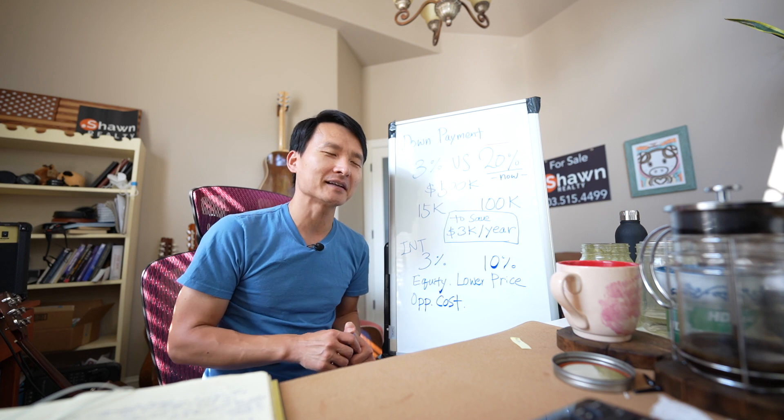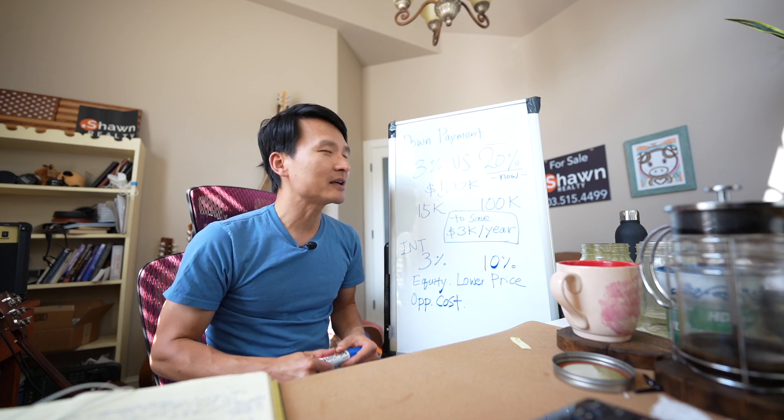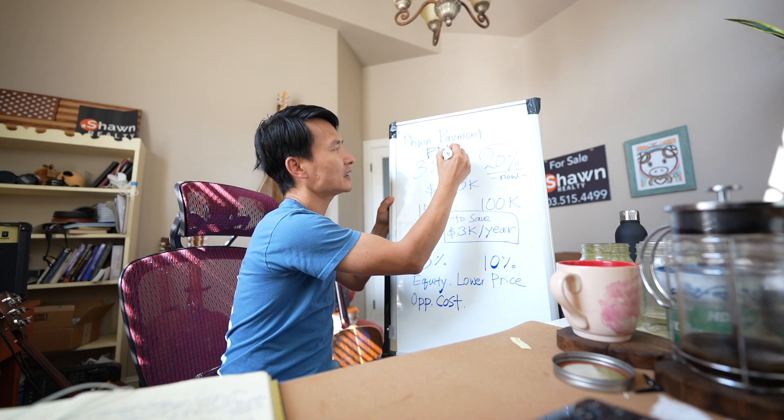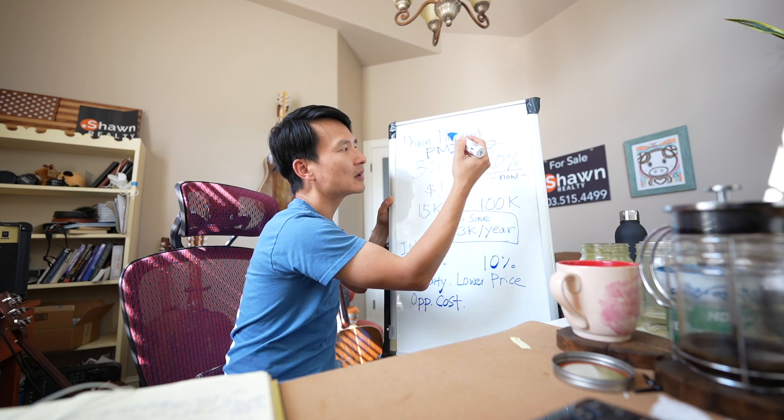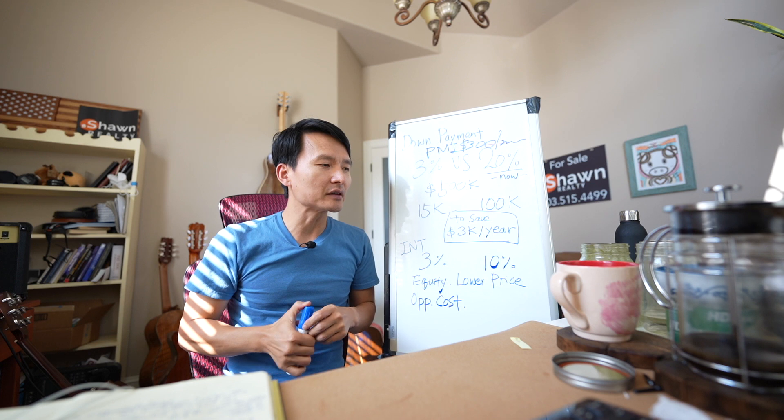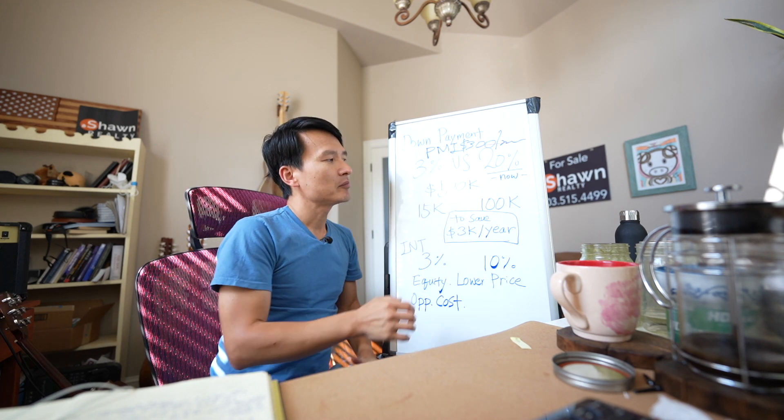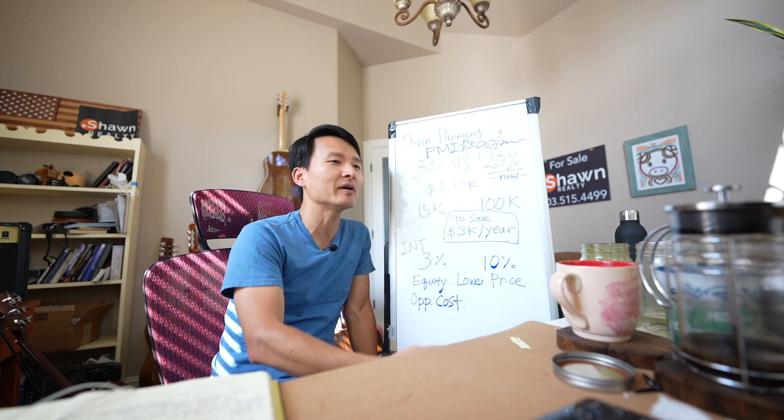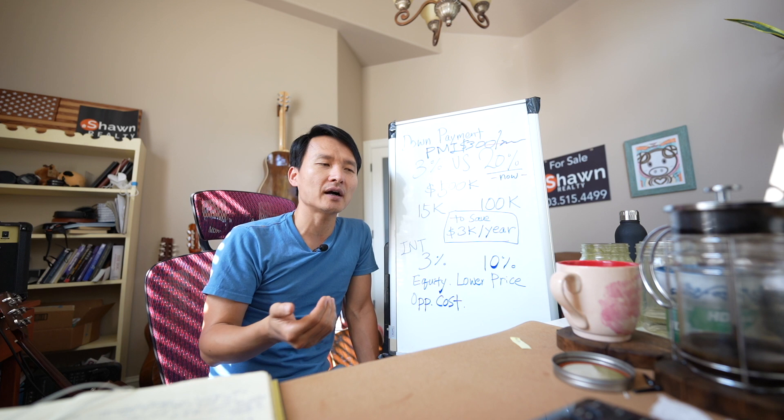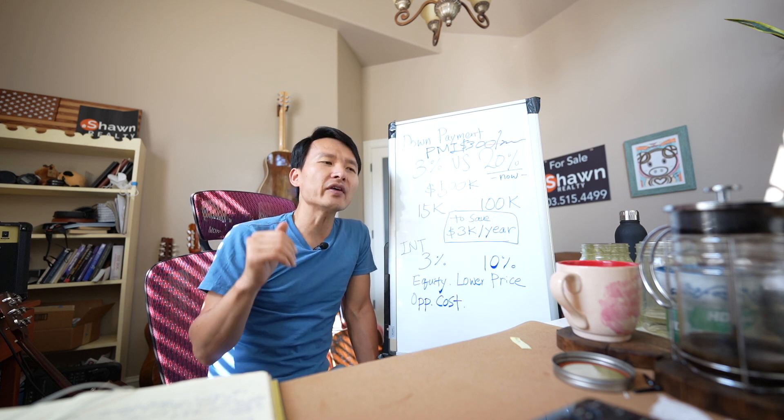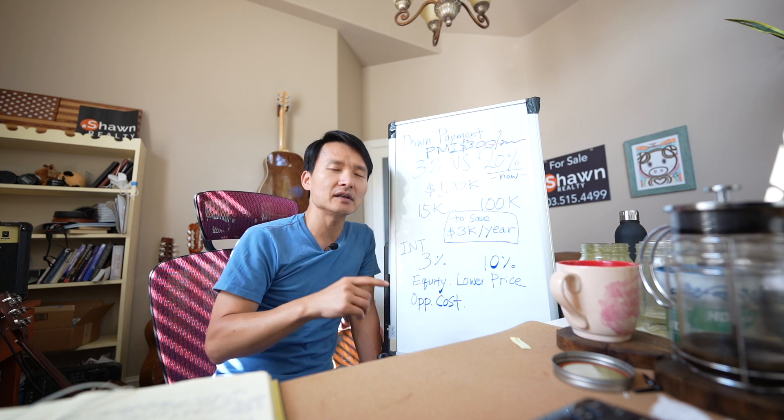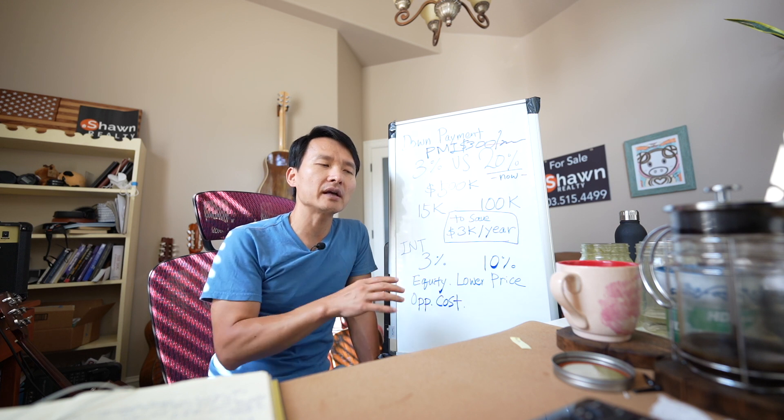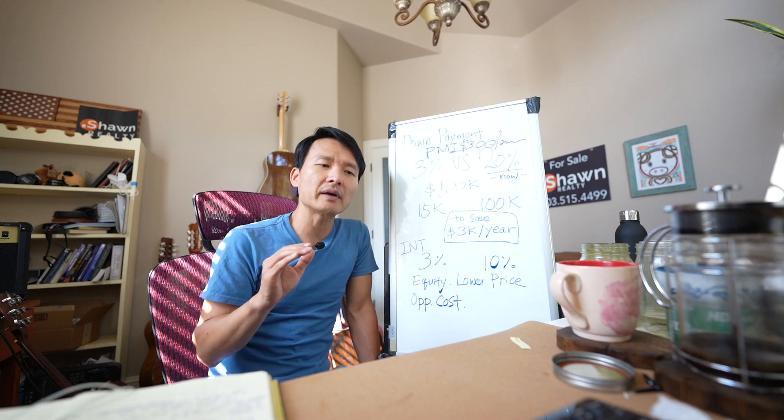The big question is PMI, private mortgage insurance. The main question is to avoid $300 a month, $3,500 to $3,600 a year. To save that, people are thinking, or our parents' generation have told our younger generation, to save up 20% or at least put down as much as you can to a house so you can do better financially. That thinking was right 30 years ago when the interest rate used to be really high, 8%, 9%, 10%, 15%, 16% interest rate. You want to pay down as much as possible as a down payment so you pay less on interest.